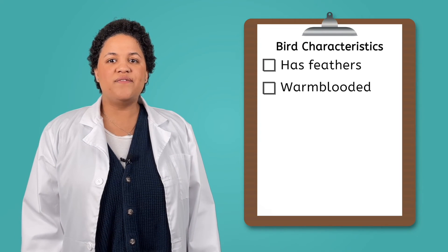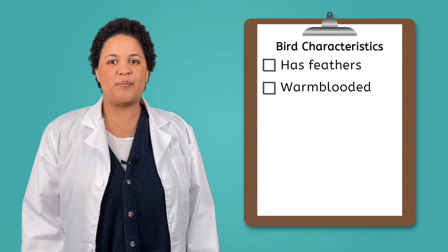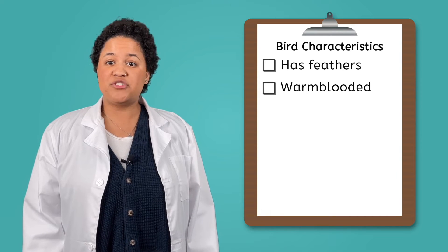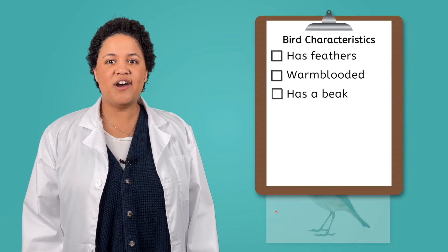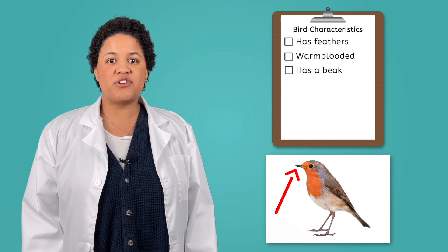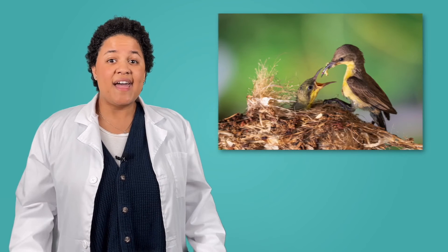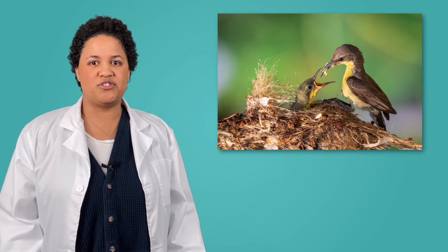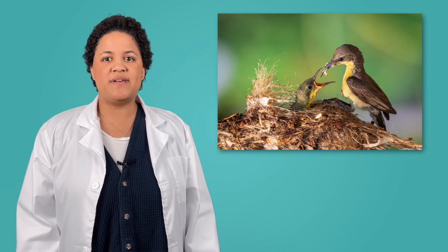Feathers aren't the only thing that helps us classify birds. Did you know that birds don't have teeth? Instead, all birds have a beak that they use to help them eat. Since birds don't have hands at the end of their wings, beaks are also used for picking up and carrying objects, protecting themselves, and feeding their young.